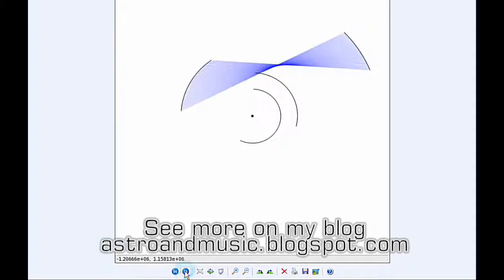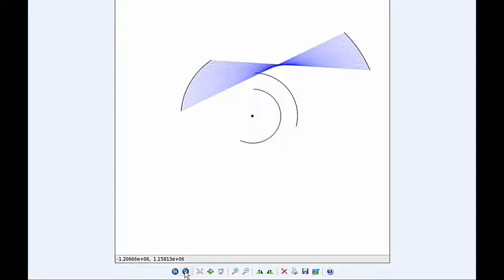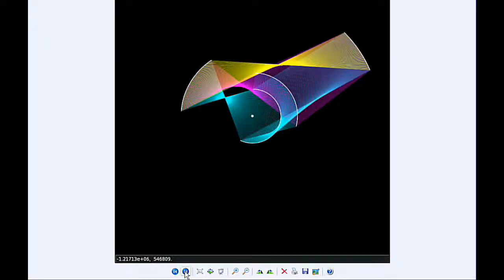Then Europa and Ganymede, Europa and Callisto - it's a nice flat sheet there - and finally Ganymede and Callisto. Then I combine all of these and colorize them a little bit to get that for today.